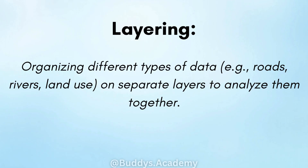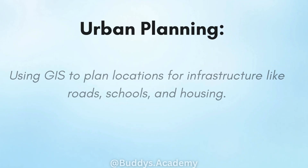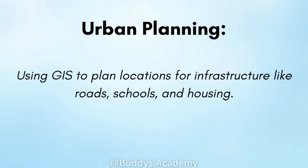Layering: this is organizing different types of data — such as roads, rivers and land use — on separate layers to analyze them together. And our last concept is urban planning: using GIS to plan locations for infrastructure like roads, schools and housing.